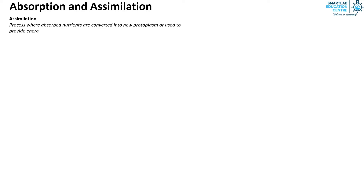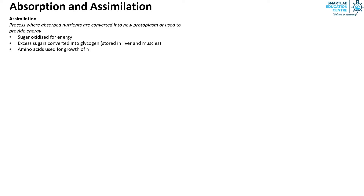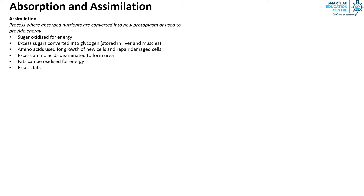Assimilation is the process where absorbed nutrients are converted into new protoplasm or used to provide energy. Sugar is oxidized for energy, and excess sugars are converted into glycogen, which is stored in the liver and muscles. Amino acids are used for growth of new cells and repair of damaged cells, and excess amino acids are deaminated to form urea. Fats can be oxidized for energy, and excess fats are stored in adipose tissues.